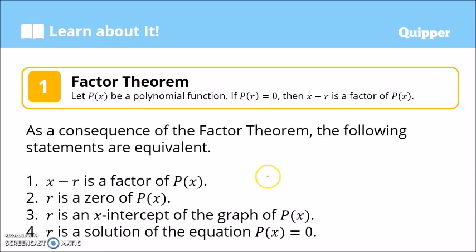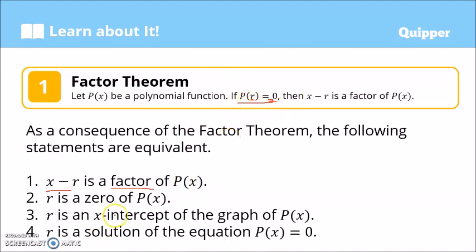Let's review first the factor theorem. The factor theorem states that let p of x be a polynomial function. If p of r equals 0, then x minus r is a factor of p of x. As a consequence of the factor theorem, the following statements are equivalent: x minus r is a factor of p of x. So if we substitute the value r into the polynomial function and the answer is 0, then x minus r is a factor. We can also say that r is a zero of p of x.